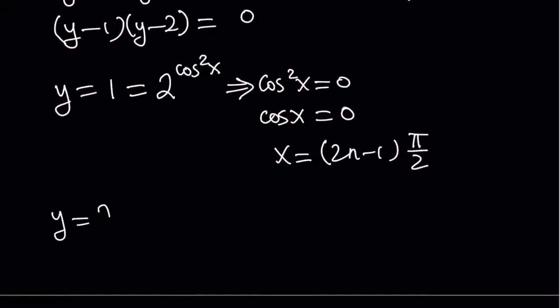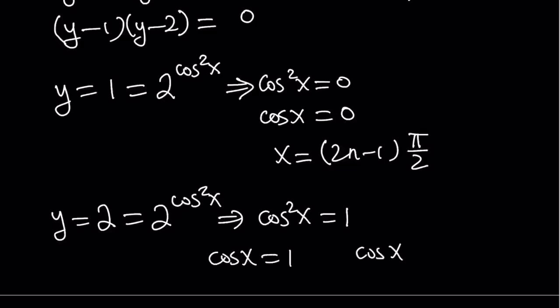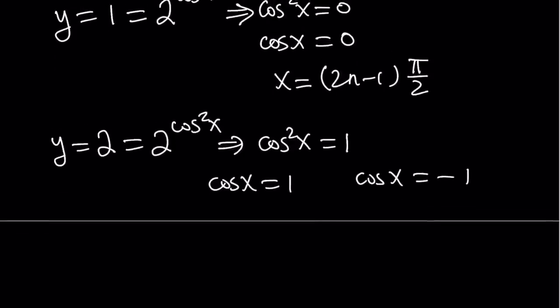Okay, the second solution comes from y equals 2. If you set that equal to 2 to the power cosine squared x, from here you get cosine squared x equals 1. But this gives you two solutions, either cosine x is equal to 1, or cosine x is equal to negative 1. Okay, great. So let's go ahead and solve each of these equations separately.